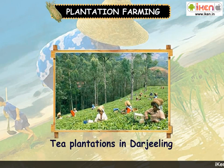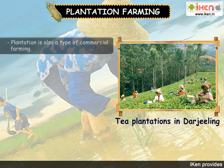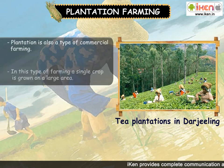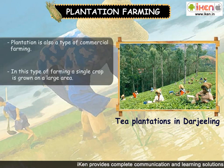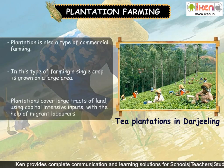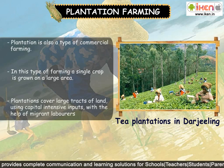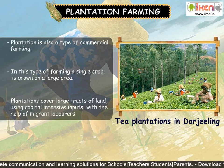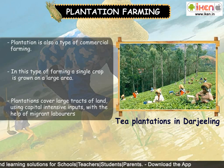Plantation farming: Plantation is also a type of commercial farming. In this type of farming, a single crop is grown on a large area. Plantations cover large tracts of land using capital-intensive inputs with the help of migrant laborers.